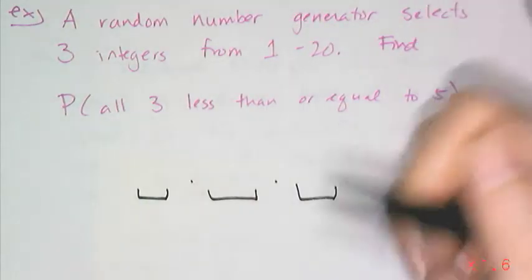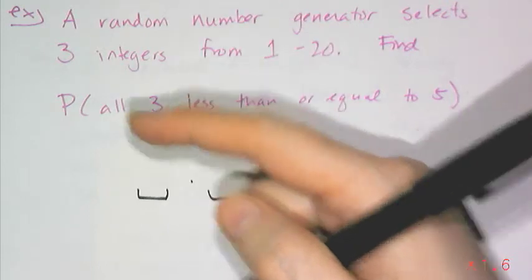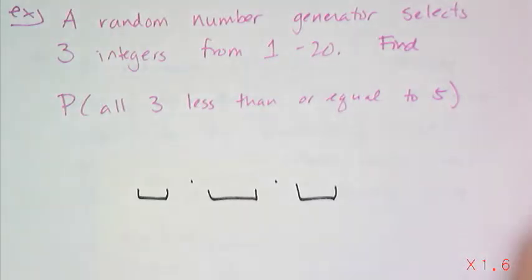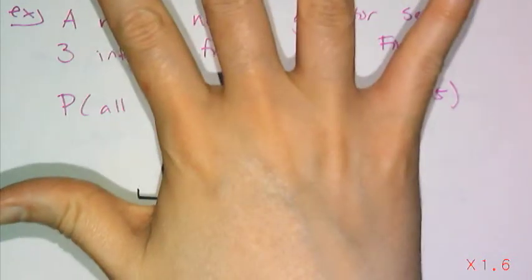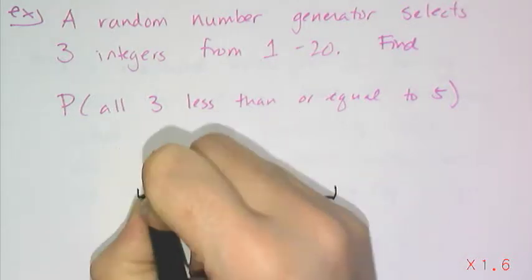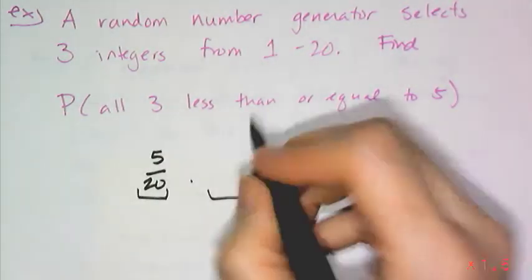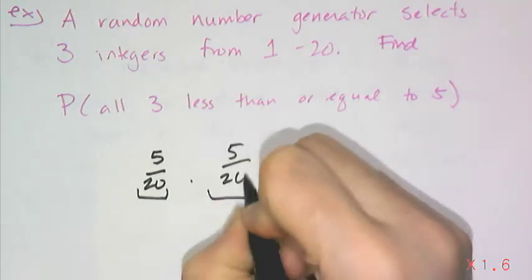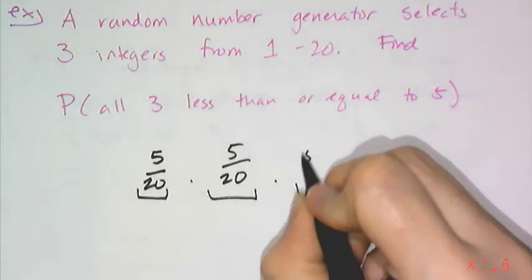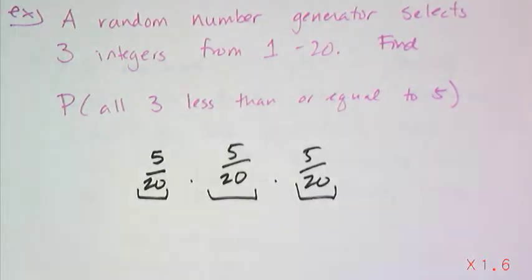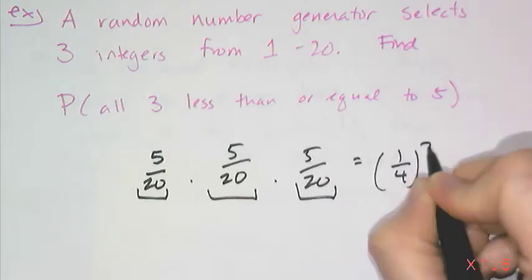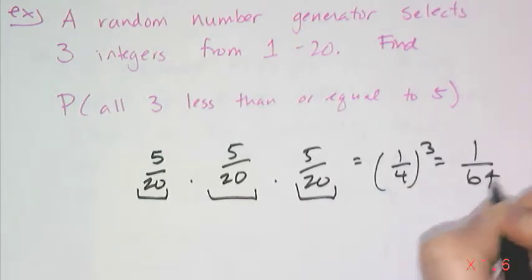To figure this out, I need to know the probability that one of these integers, the first one, is going to be less than or equal to five. There are one, two, three, four, five numbers that are less than or equal to five, out of one to twenty. So it's five over twenty. The second number has also a chance of five out of twenty of being less than or equal to five, and the last one is also five out of twenty. And those, of course, I'll simplify to a fourth, which leaves me one-fourth cubed, or one over sixty-four.